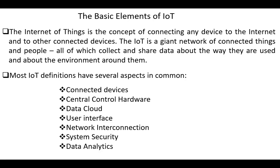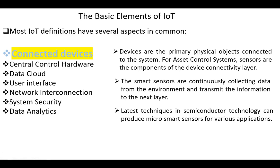These are: connected devices, central control hardware, data cloud, user interface, network interconnection, system security, and data analytics. First, connected devices. Devices are the primary physical objects connected to the system. For asset control systems, sensors are the components of the device connectivity layer. The smart sensors are continuously collecting data from the environment and transmit the information to the next layer. Latest techniques in semiconductor technology can produce micro-smart sensors for various applications.